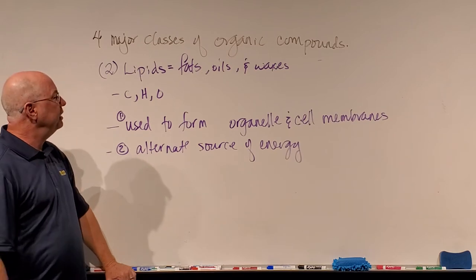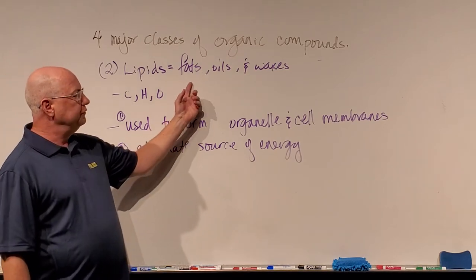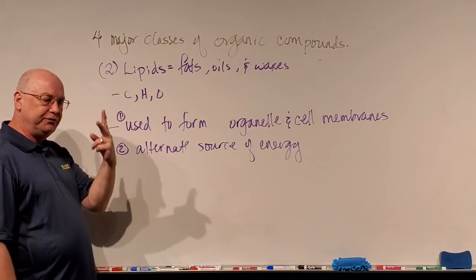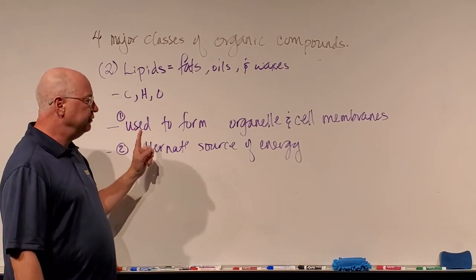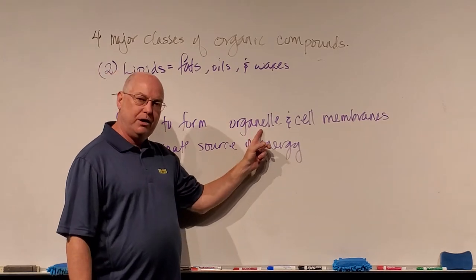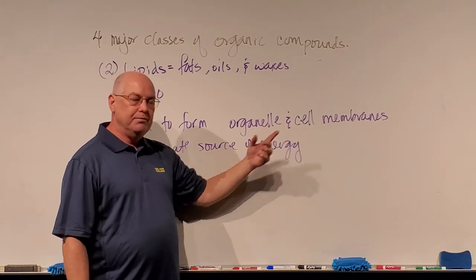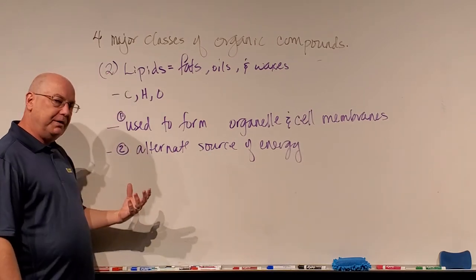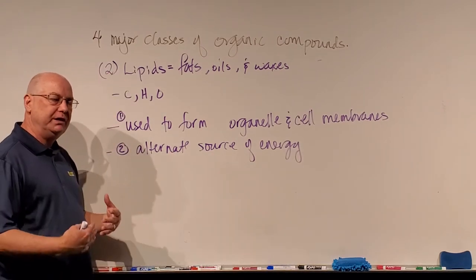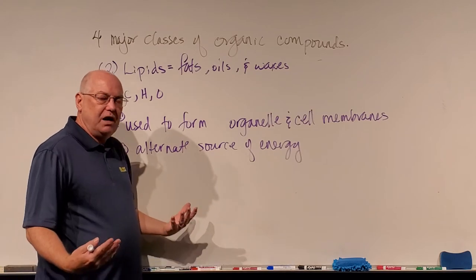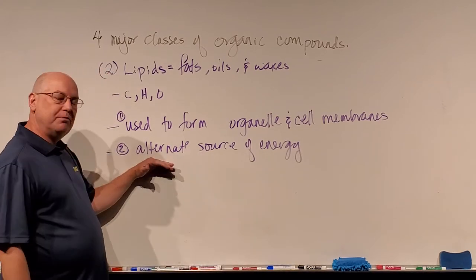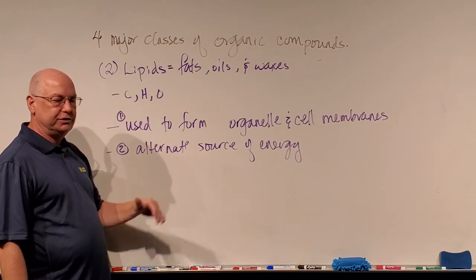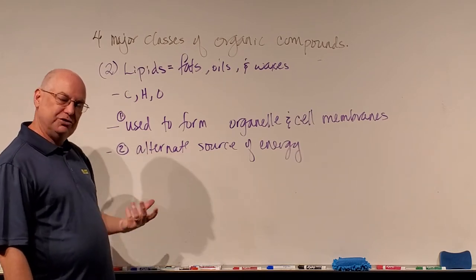So the three things to know about lipids: they're also called fats, oils, and waxes; they're made out of carbon, hydrogen, and oxygen; and we have two functions for them. The primary function is to form membranes so our cells can grow and repair damage. But if we run out of sugar, we can start burning fats for energy — they are an alternate source of energy when we run out of sugar.